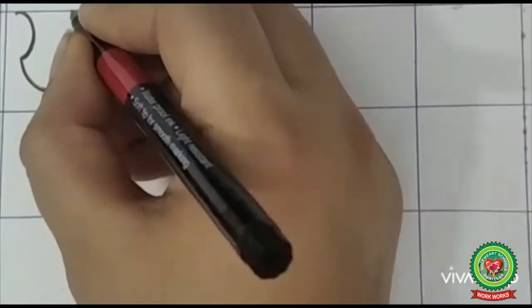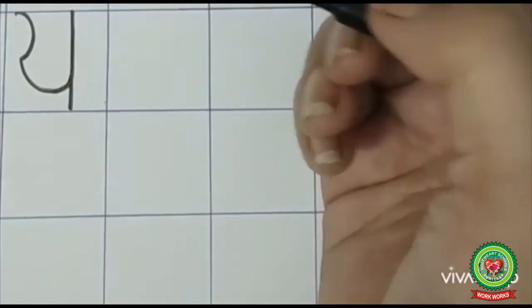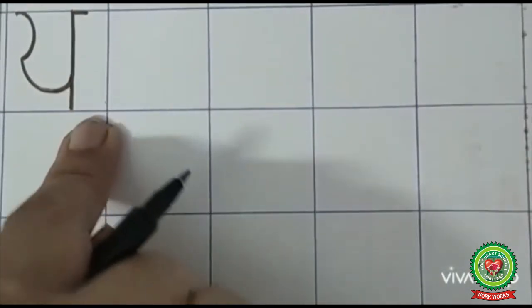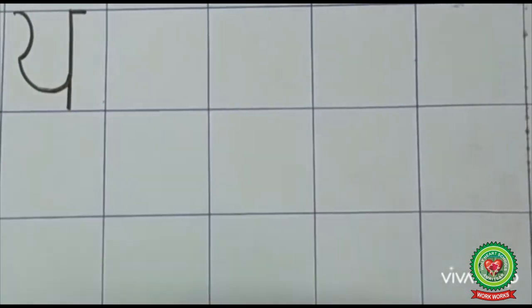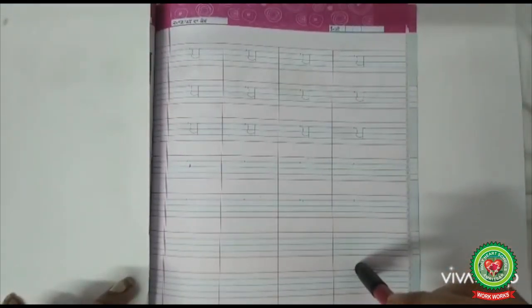Then draw a standing line like this, and then draw a small sleeping line. This is Papa. I hope you will finish this page in good handwriting and in proper formation. Thanks for watching the video.